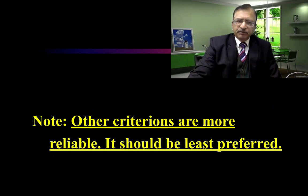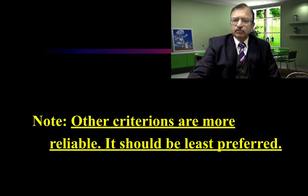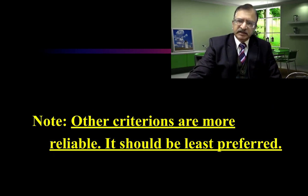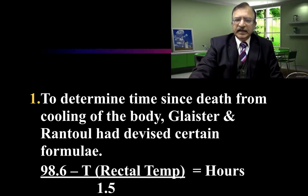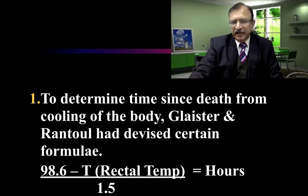An important note is that other criteria are also more reliable and should be preferred over temperature for the estimation of time of death. The formula is: 98.6 minus the rectal temperature, divided by 1.5, gives hours after death.